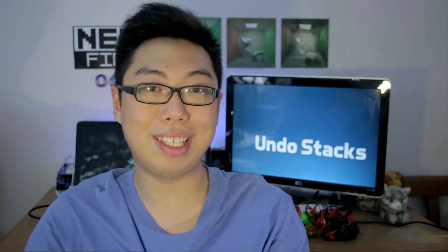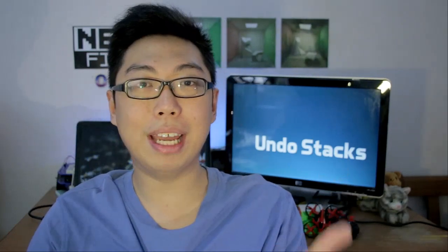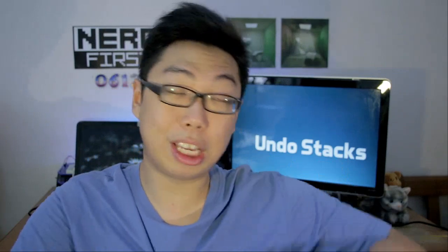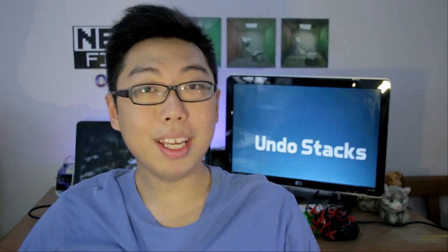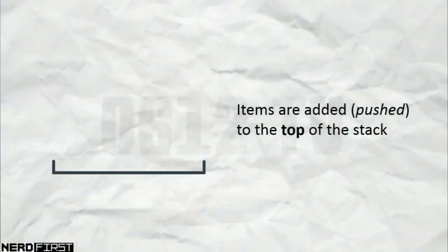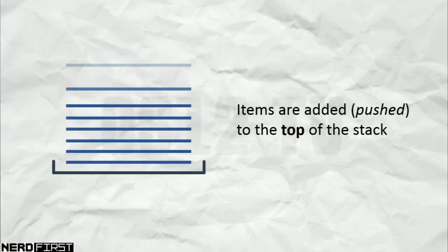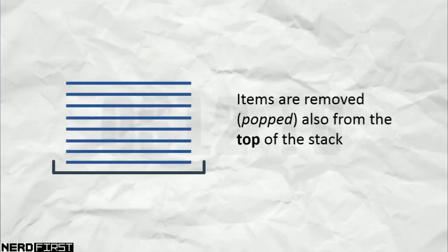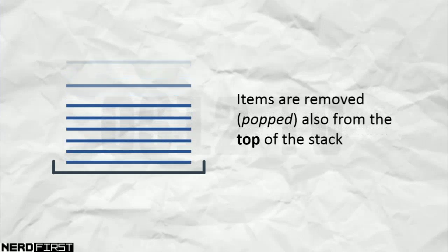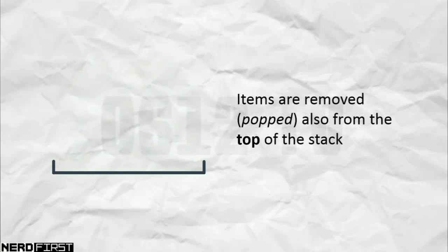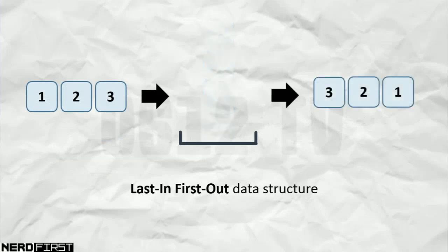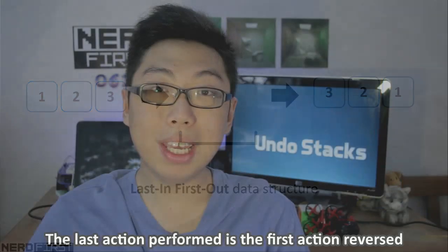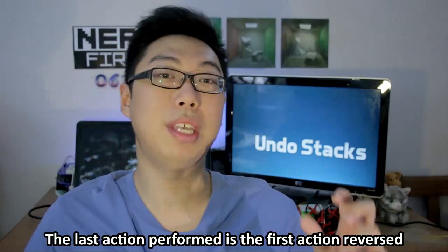I'm not going to go into too much detail as to what a stack is, but essentially it's a data structure — a collection of items modeled after a stack of paper. Every time you want to add something to this collection, you add it to the top, just like a stack of papers. And every time you want to remove an item, you start removing from the top as well. This creates a pattern called LIFO — last in, first out. And if you think about it, that's exactly what Undo is doing: the last action you've performed is the first action we're going to reverse when you say Undo.